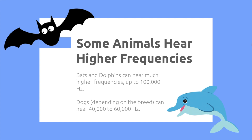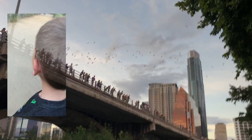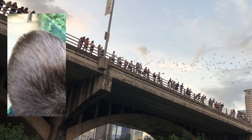Some animals hear higher frequencies, like bats and dolphins — they can hear up to 100,000 Hertz. Dogs, depending on the breed, can hear anywhere between 40,000 to 60,000 Hertz. That's crazy!